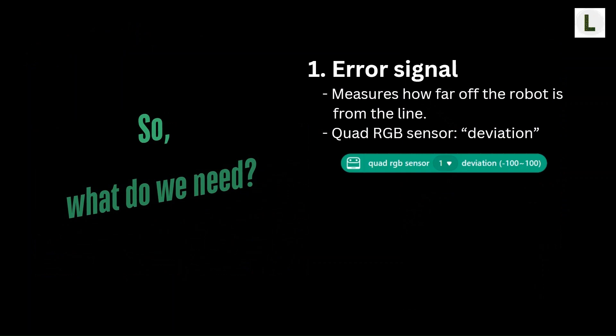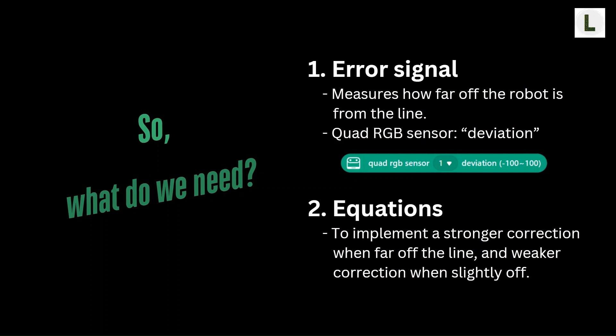So what do we need to implement proportional control? First, we need an error signal — in our case, this is called deviation, a number that tells us how far off the robot is from the center of the line. The Quad RGB sensor provides this automatically in mBlock using the deviation block. Second, we need a stronger correction for larger deviation and a weaker correction for smaller deviation. To achieve this correction proportional to the amount of deviation, we need a couple of equations that dictate how much power is sent to each of the left and right motors.